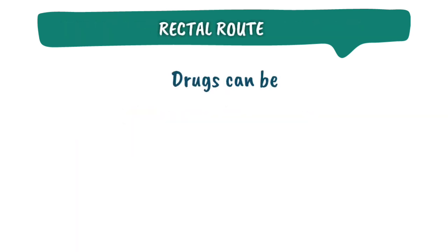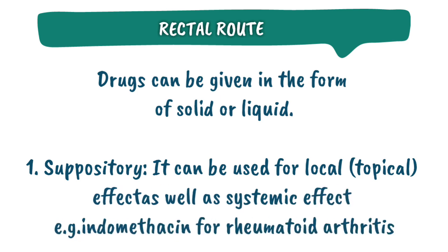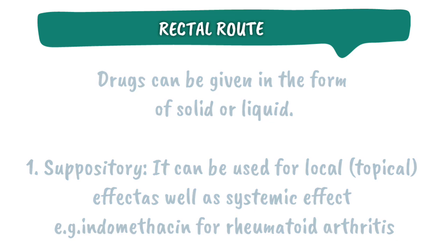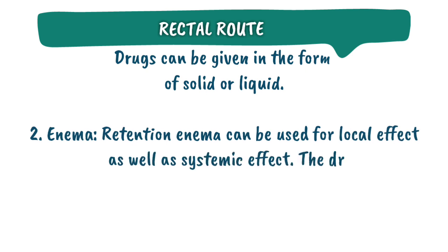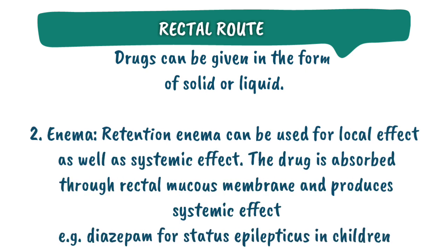Rectal route. Through the rectal route, drugs can be given in the form of solid or liquid. First, suppository — it can be used for local as well as systemic effect, for example indomethacin for rheumatoid arthritis. Second, enema — retention enema can be used for local as well as systemic effect. The drug is absorbed through the rectal mucous membrane and produces systemic effect, for example diazepam for status epilepticus in children.